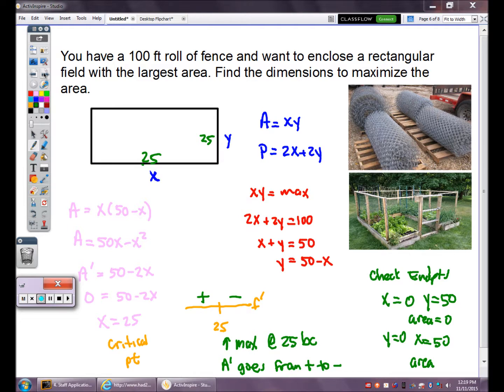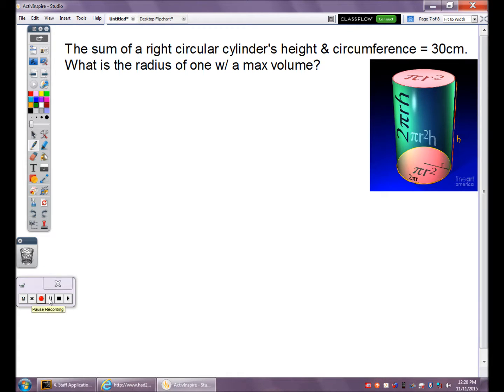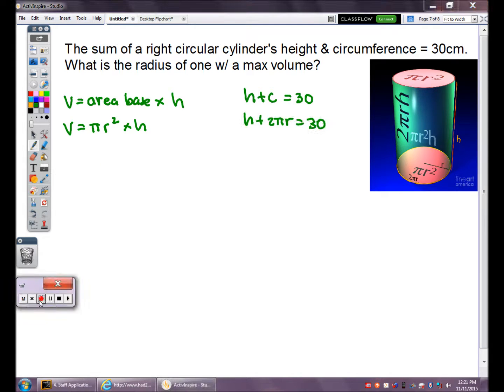Question two. For your memory, the volume of a cylinder is area of the base times height. Volume equals pi r squared times height h. We were given that the height plus the circumference must be 30. The formula for circumference is 2 pi r. So h plus 2 pi r equals 30. I'm going to solve this for h by subtracting 2 pi r. Now I have a formula for height.